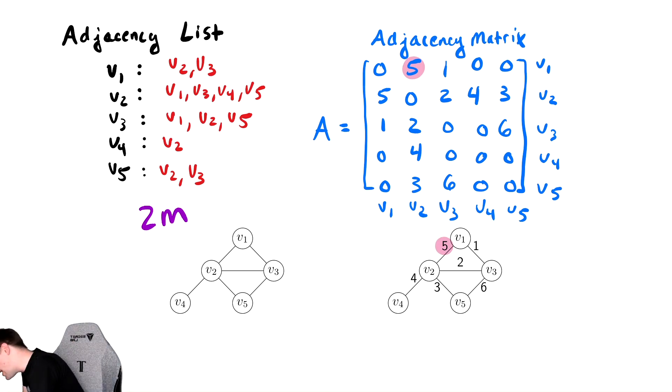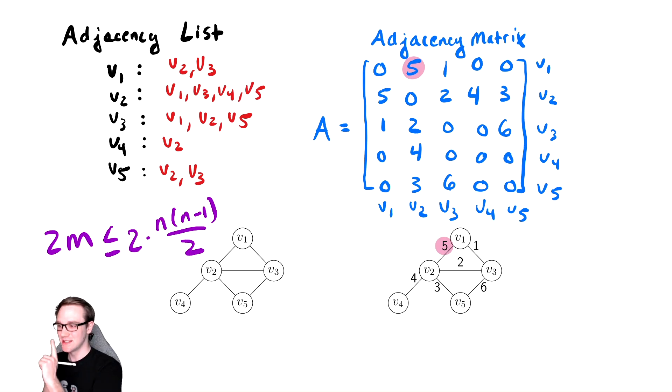We know something. We know M, the number of edges, is less than or equal to N times N minus one over two.